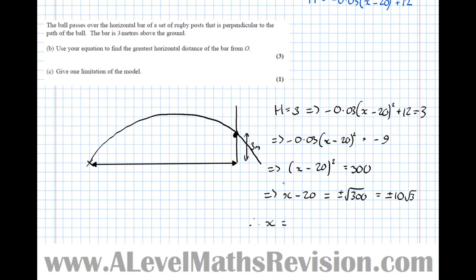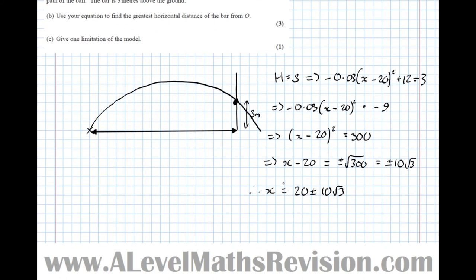Therefore, x equals 20 plus or minus 10 root 3. Now we can discard the 20 minus 10 root 3 because we want the greatest distance. So finally, that implies that distance equals 20 plus 10 root 3, since we want greatest distance.